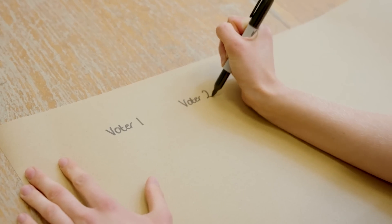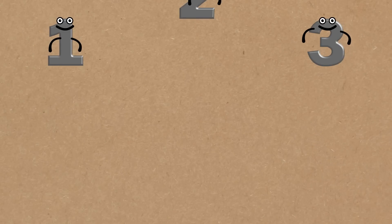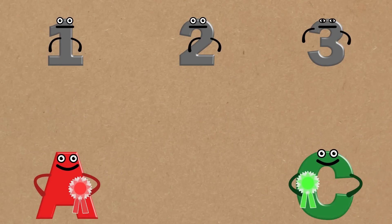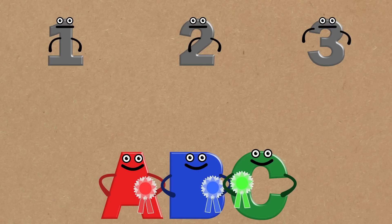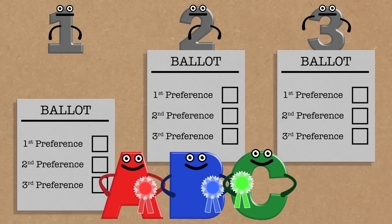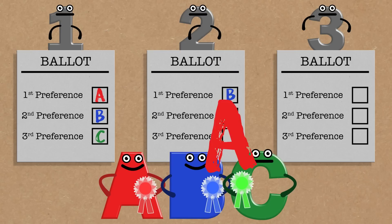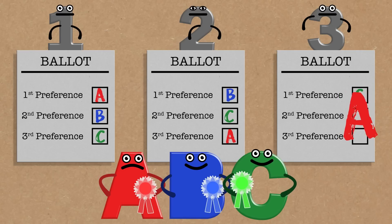So let's imagine we have three voters and three candidates, and they're each going to put down their top three preferences — they're going to order all of them. Voter 1 first likes Candidate A, they put Candidate B second, and C third. Voter 2 favours Candidate B, second they want Candidate C, and third they like Candidate A. And for Voter 3, they want Candidate C first, second they'll put Candidate A, and third they'll put Candidate B.